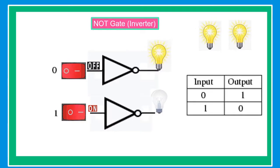Our next topic is the NOT gate, or inverter. The NOT gate is a single input, single output gate, also known as an inverter. If it receives zero as an input, it produces one as an output. Similarly, if it receives one as an input, it will produce zero as an output.